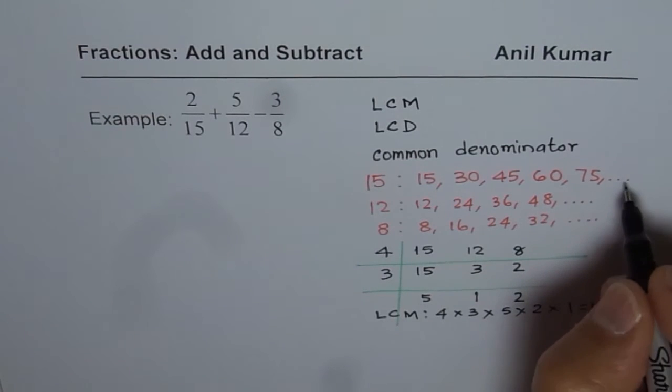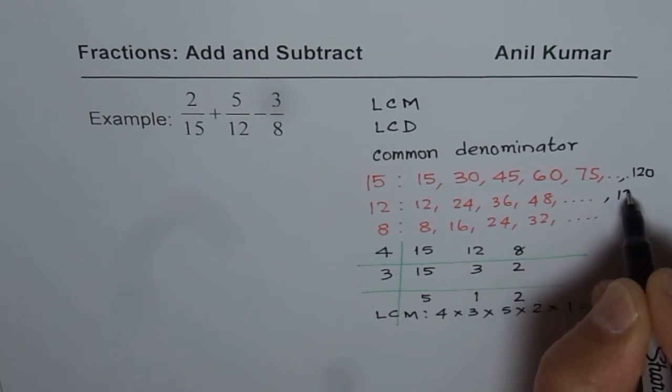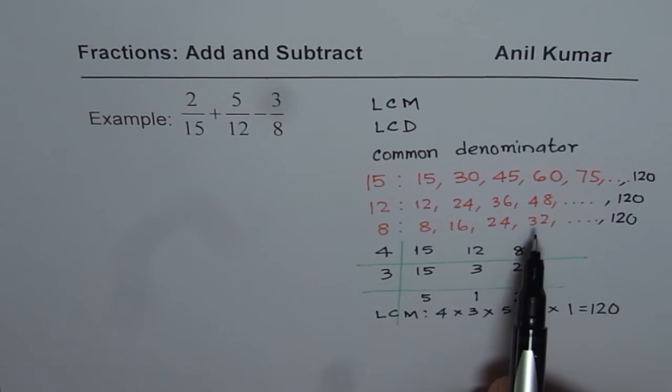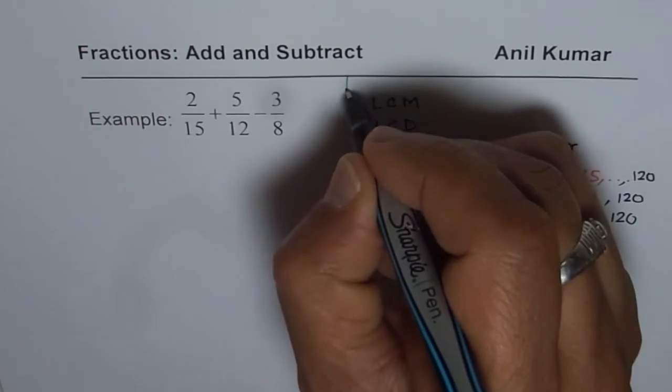So if you continue this list there will be 120 in all of them and that will be your least common multiple. You could also use the strategy of prime factorization to find least common multiple. Check some of my videos on that also. Anyway, one part is over, we know the common denominator is 120. This is what we found.